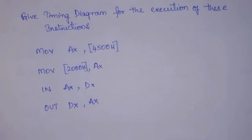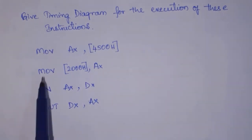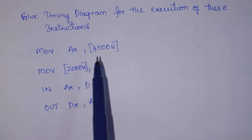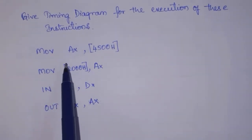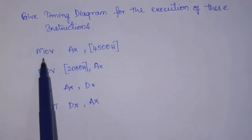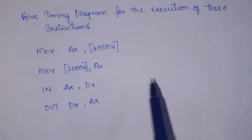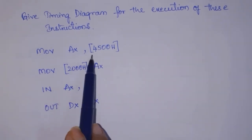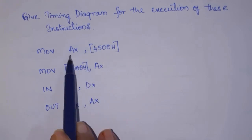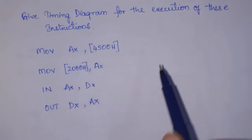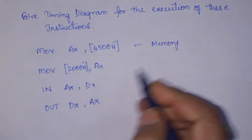If you are asked to give a timing diagram for the execution of an instruction, note that instruction fetching is different. To execute a particular instruction, once it is fetched and decoded, you need to identify which machine cycle is to be performed — memory read, memory write, IO read, or IO write. For example, an instruction that gets data from memory at a given offset address into the AX register requires a memory read cycle.